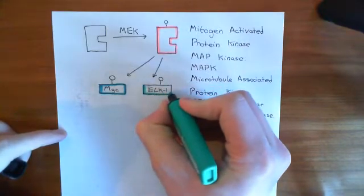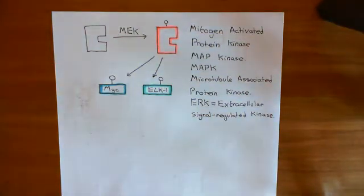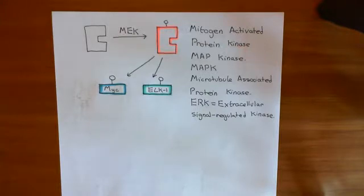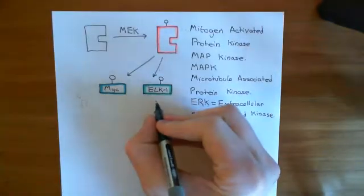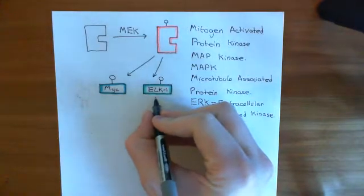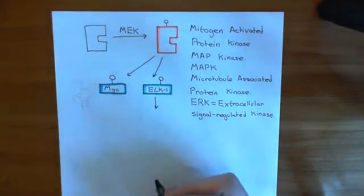MYC is going to cause the cell to divide. It's often given the grandiose title of the cell's most powerful mitogen — a mitogen being any protein or molecule that causes the cell to divide. ELK-1 is also going to cause the cell to divide, but not directly. It's going to increase the expression of another transcription factor, which then causes the cell to divide.